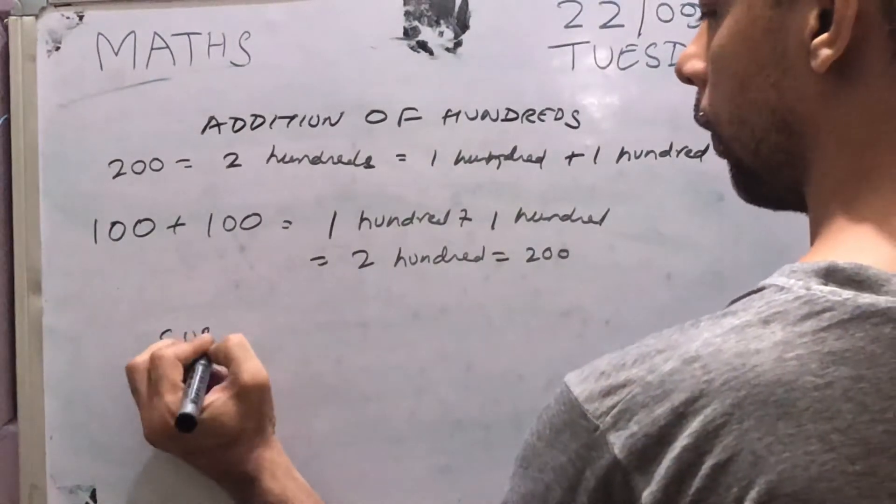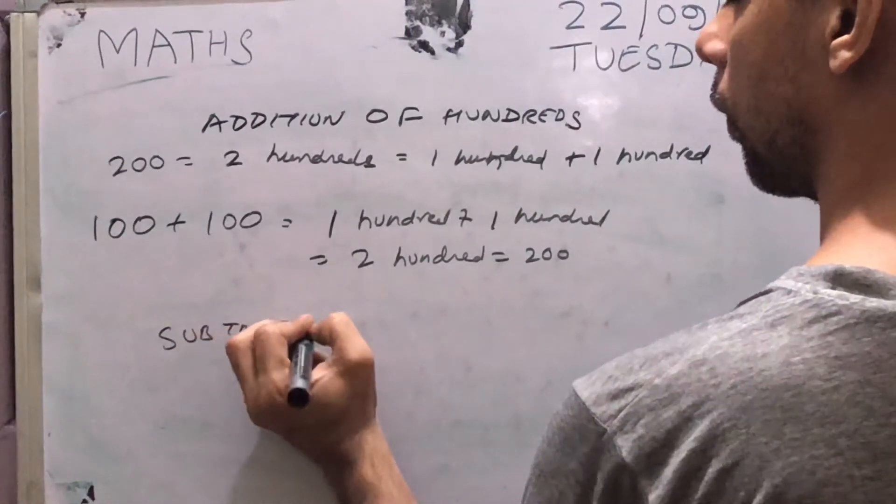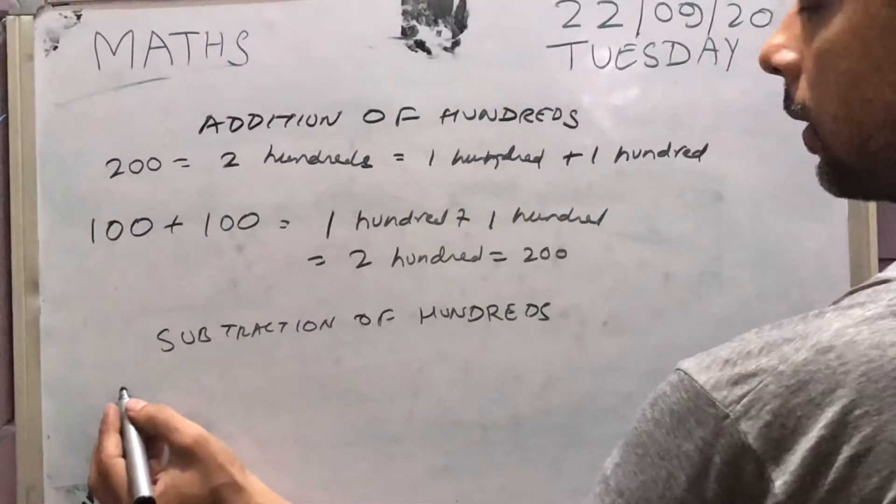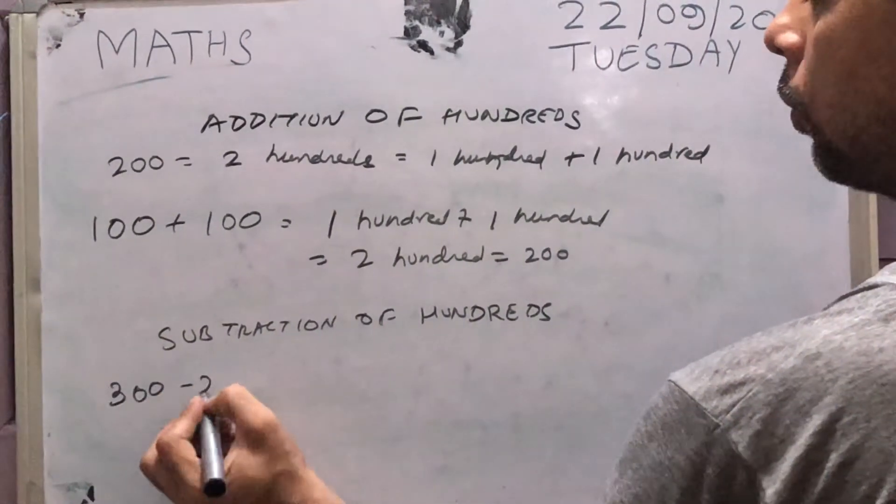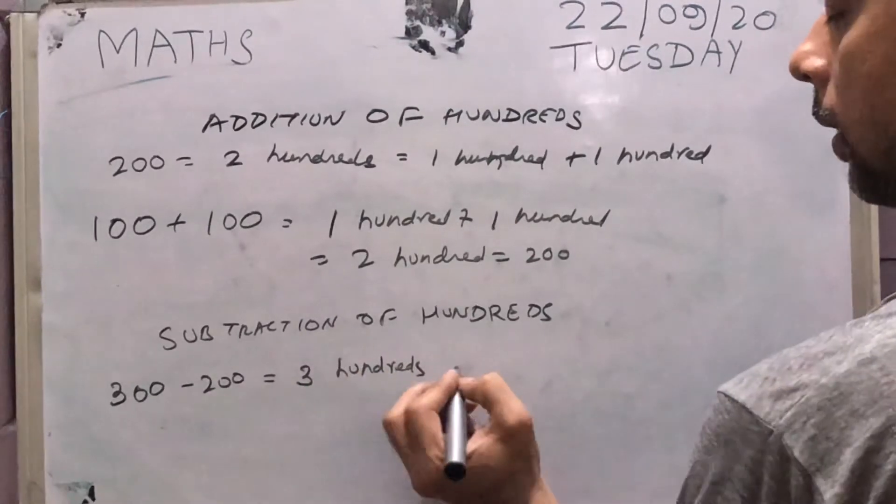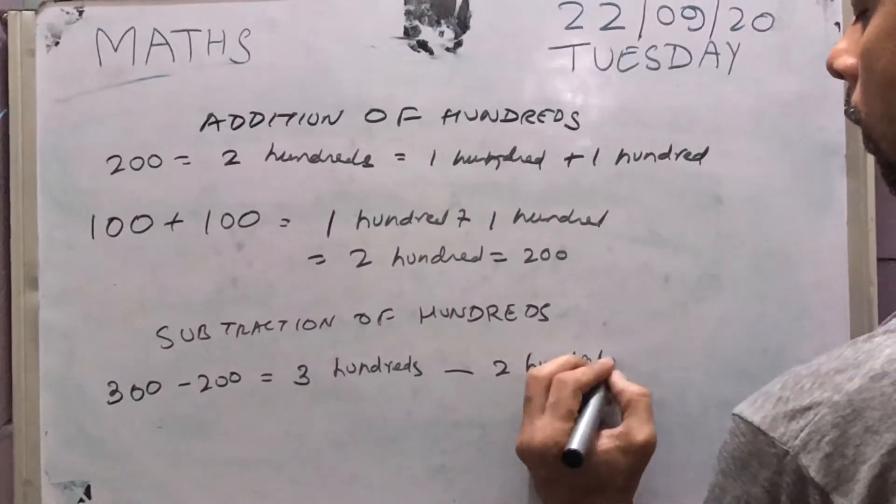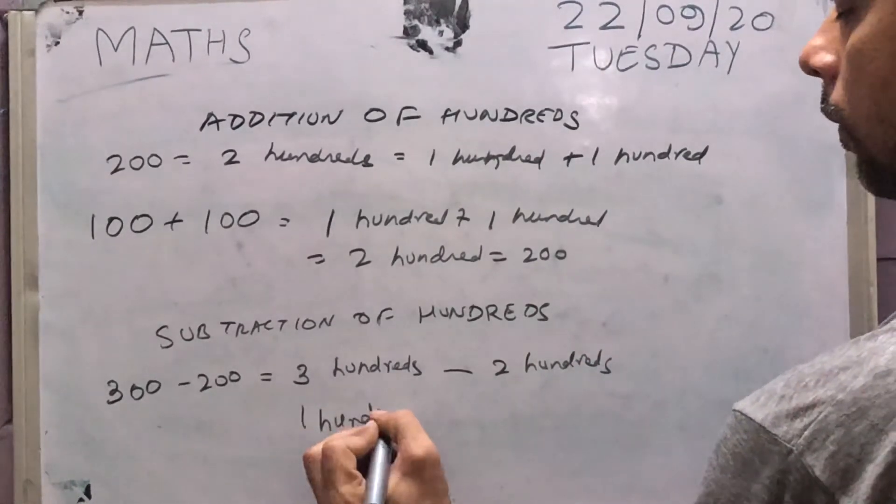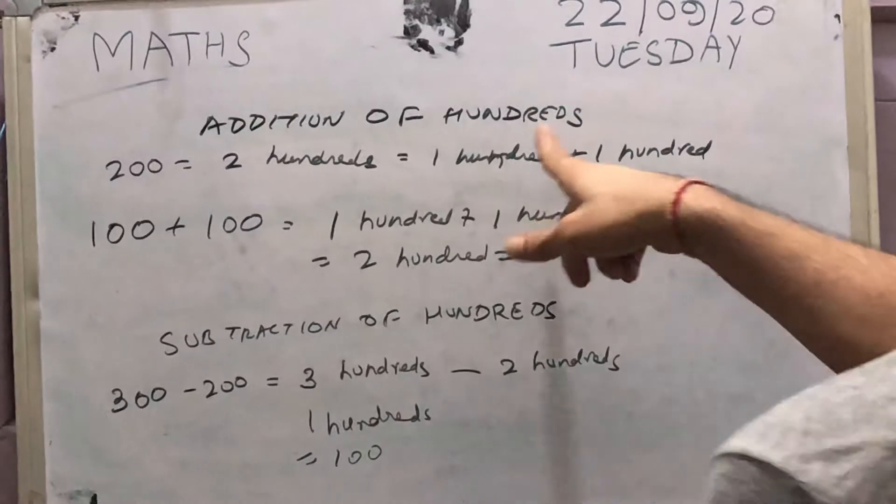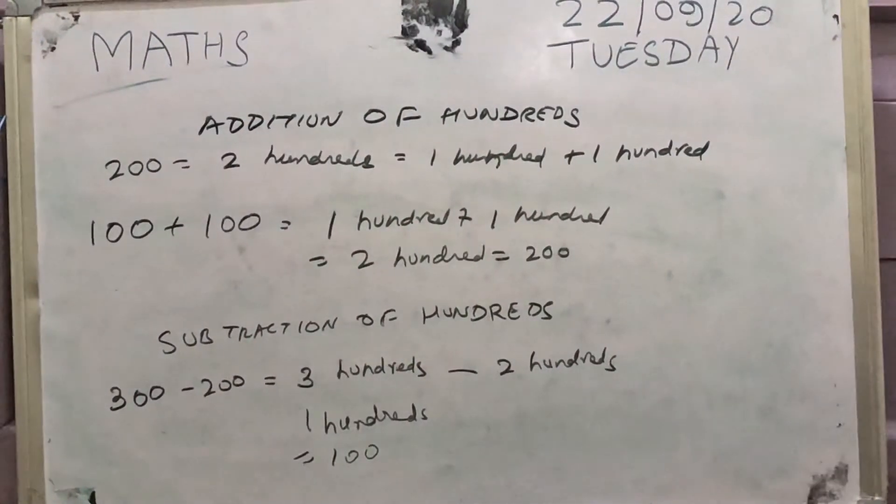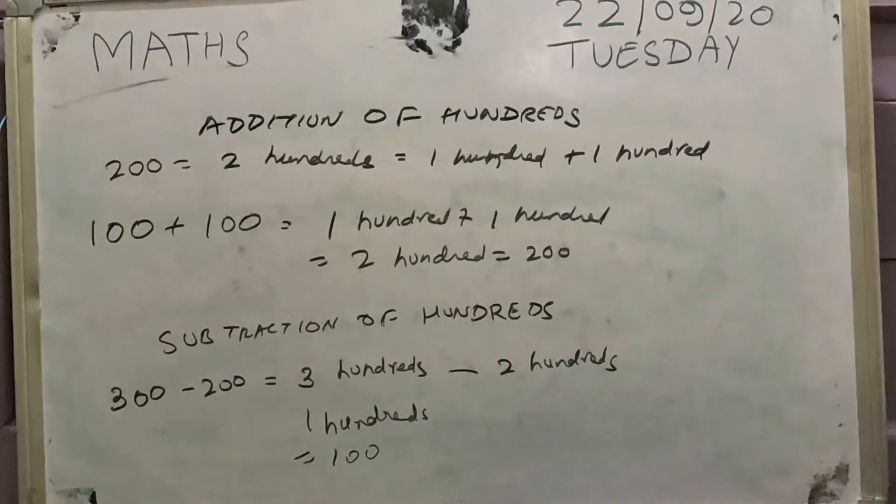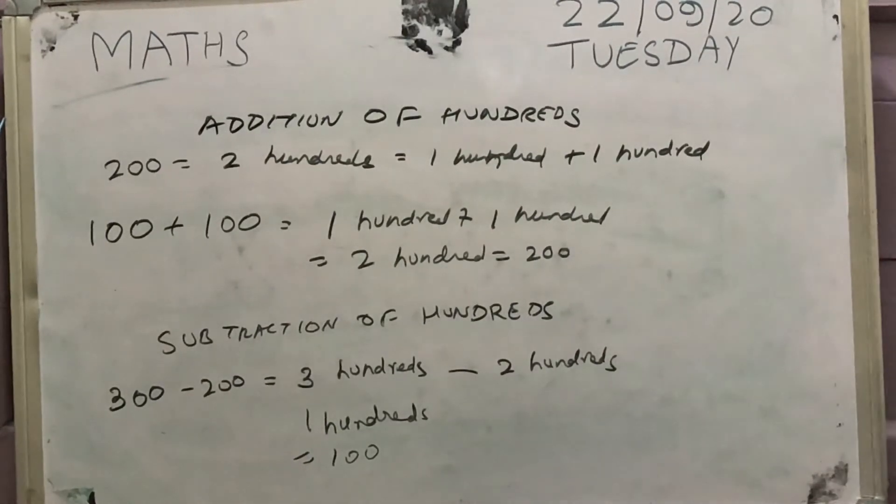And similarly for subtraction, subtraction of hundreds. What can you do? For example, 300 minus 200. What is 300? It is 3 hundreds. Minus 200 is 2 hundreds. 3 minus 2 is 1. And copy down hundreds, which is 1 hundred. That is your answer. So for hundreds you can apply the same logic for addition or subtraction. And it is very easy. Again, you have certain exercises in the book that you can do. If you have any query, please send your query in your group WhatsApp.